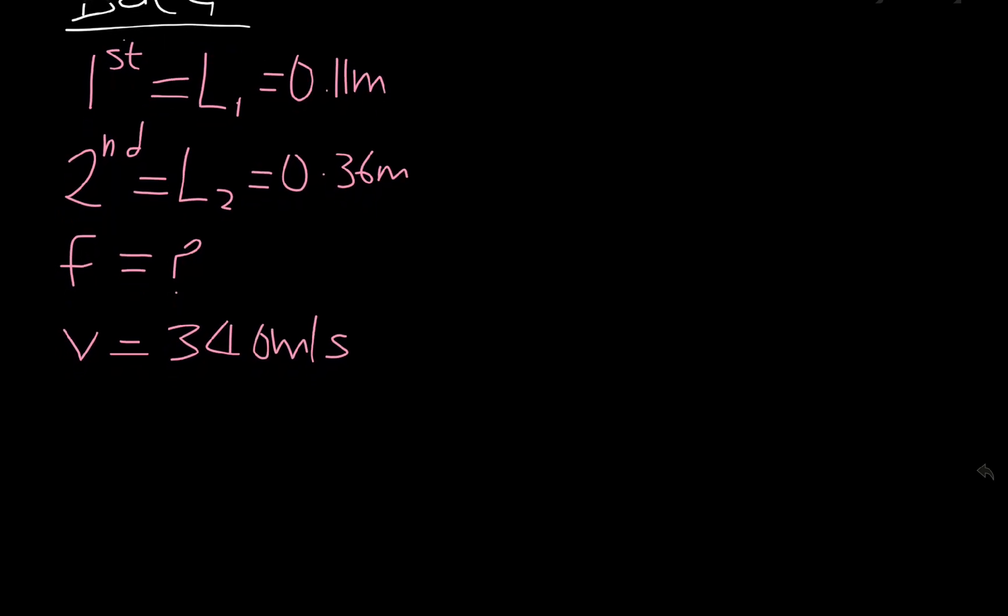Next thing is to write out our relationship or the formula. The formula to use in this context is F equals V over 2, open bracket, L2 minus L1. I'm just going to box this.